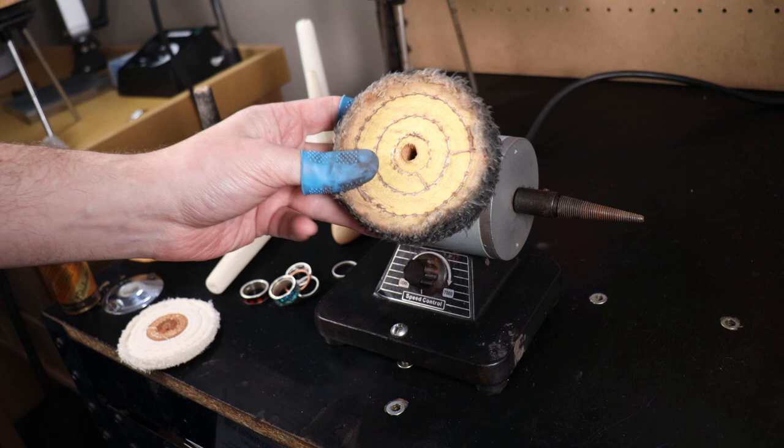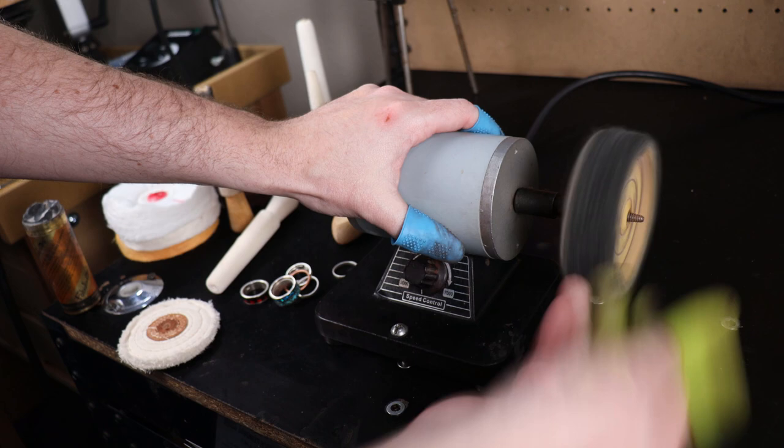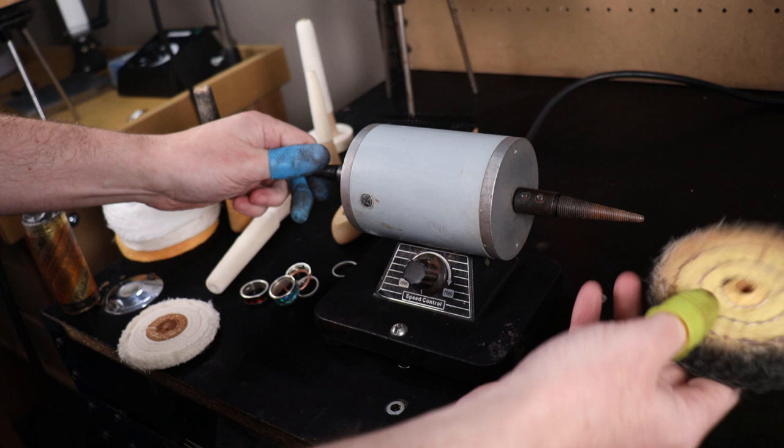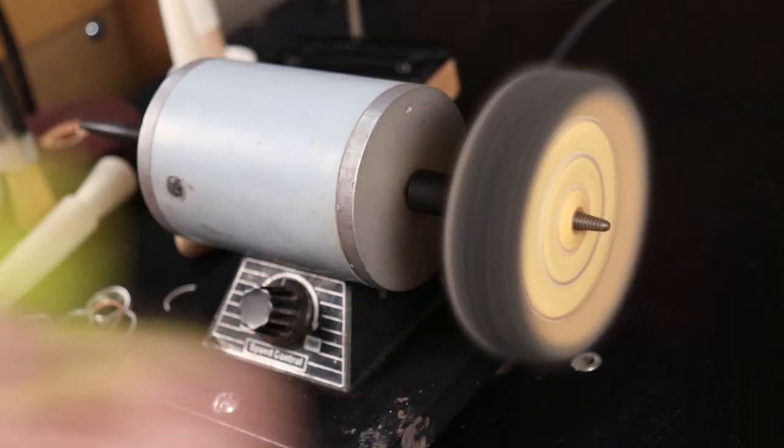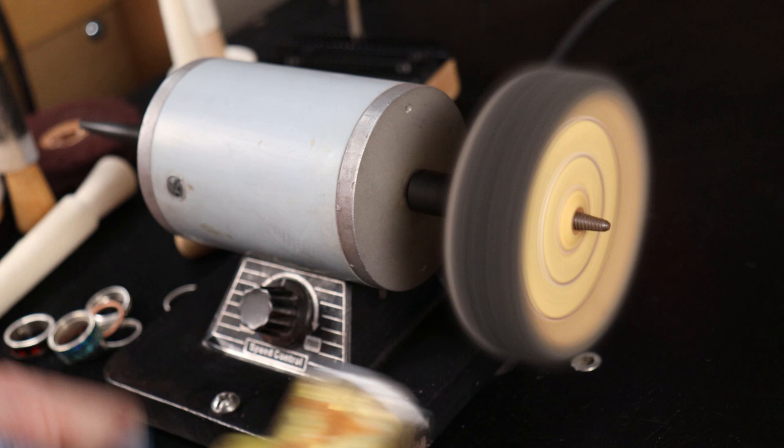To start out we're just going to use one of the buffs that I've already used. You can take this and screw it on if you wanted to and that does work, but really just turn it on, take this and put it on. So with it going like this I'm just going to take a little bit of my polishing compound and add it to it.